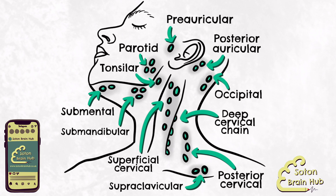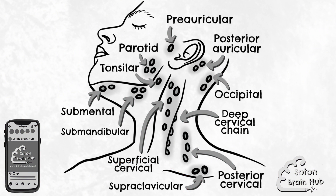The two lower deep lymph nodes of interest are the supraclavicular and the lower jugular omohyoid nodes. Supraclavicular nodes are found superior to the clavicle in the supraclavicular fossa. The right supraclavicular lymph node is concerned with the drainage of the midsection of the chest, oesophagus and lungs. The left supraclavicular lymph node, commonly known as Virchow's node, is responsible for draining the thoracic duct, abdomen and thorax.